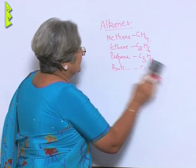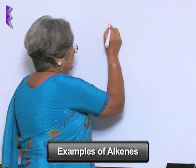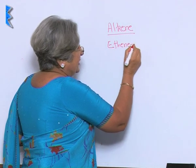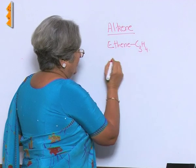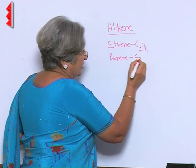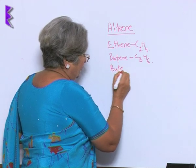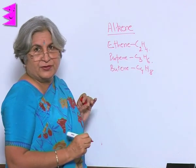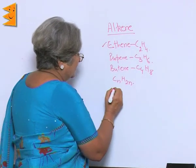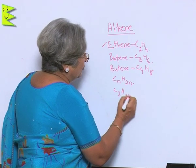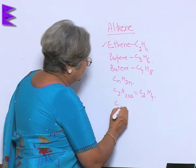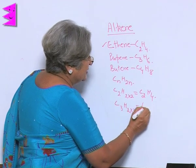Now let us take another case — alkenes. Ethene is C2H4, propene is C3H6, butene is C4H8. So what is the general formula? CnH2n. Let us verify: if carbon atoms are 2, then C2H(2×2) = C2H4. If carbon atoms are 3, then C3H(2×3) = C3H6.